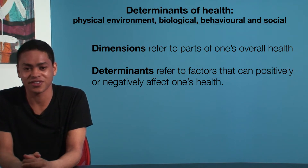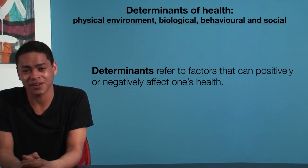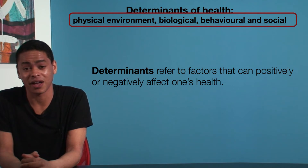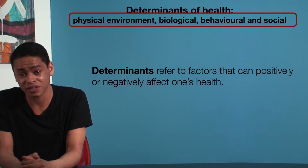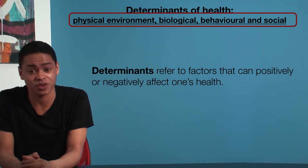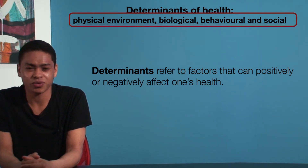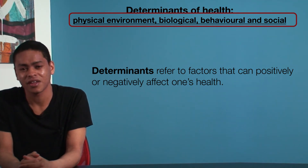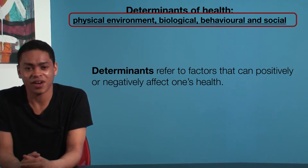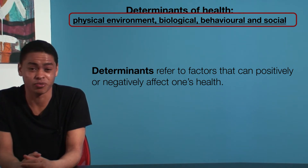For now, let's focus on the determinants. There are four determinants of health that you will need to know: biological, behavioural, physical environment, and social. These determinants are important because they are used extensively throughout the year. As such, it's a good idea to try and get a good understanding of them as soon as possible.